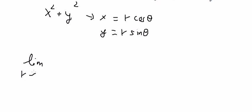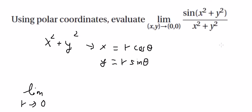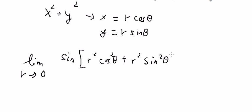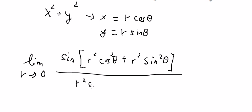R will go to zero because x goes to zero and y goes to zero. After substituting, we get sine of R squared cosine squared theta plus R squared sine squared theta, and the denominator becomes R squared cosine squared theta plus R squared sine squared theta.